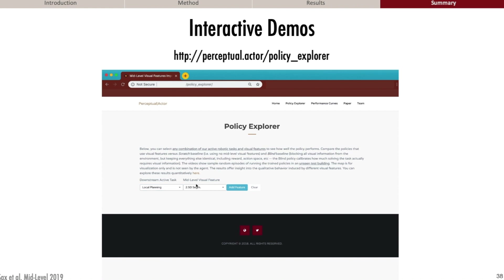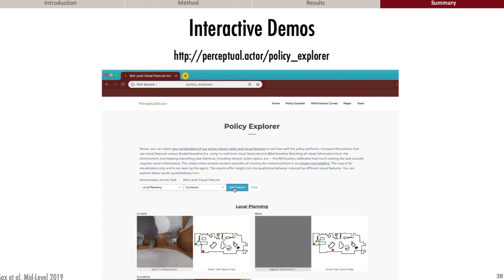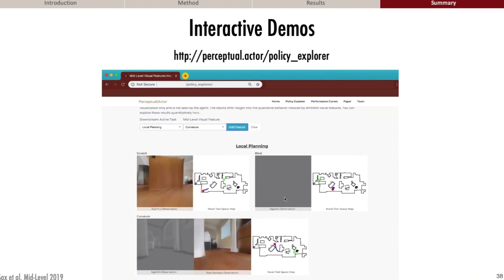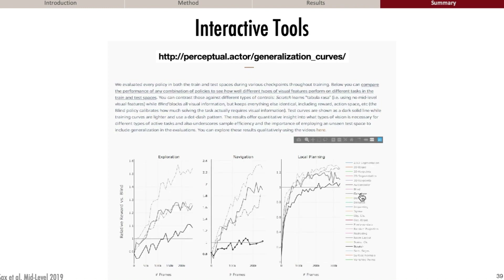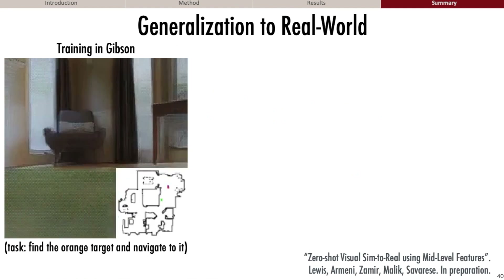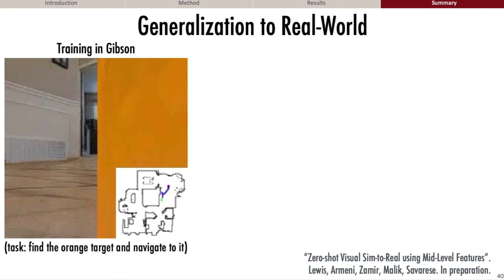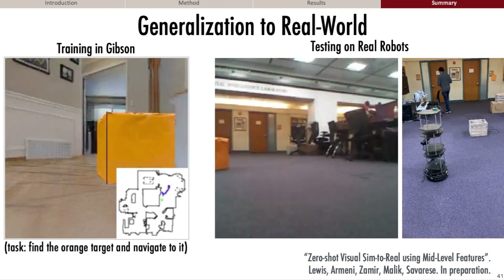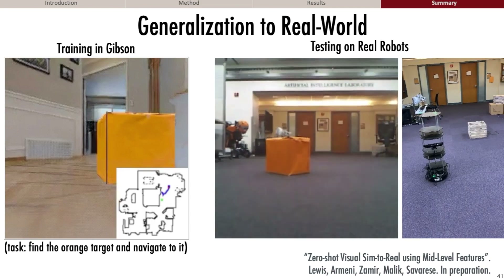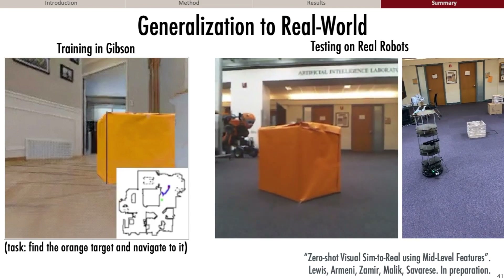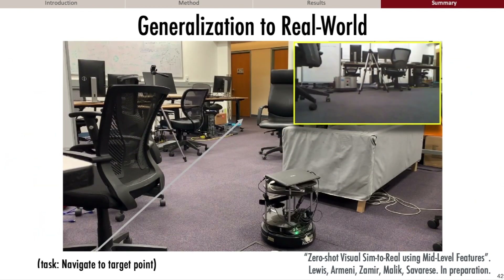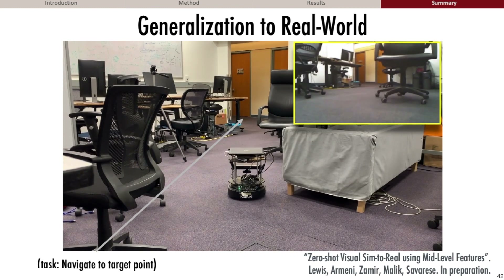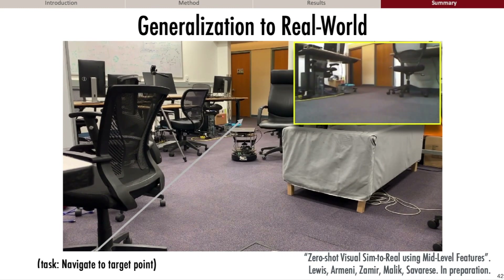We have a lot more on our website, including demos where you can check out trajectories of agents trained for any of the different tasks using any of the different features, and you can compare them quantitatively by looking at training and test curves. We also include examples of agents generalizing to the real world — the agent was trained to navigate to an orange cube in the Gibson environment, then the policy was applied to a real TurtleBot. You can see the agent navigating in the computer science building to a real orange cube, even in the presence of white distractor cubes not present during training. We also tried this for different policies, such as those trained to do point navigation in a cluttered environment.